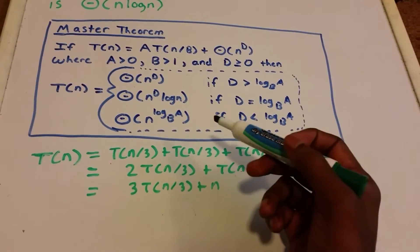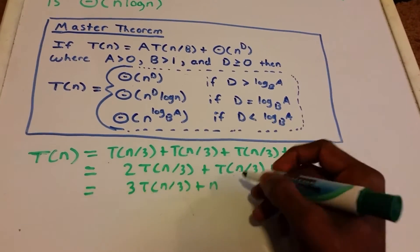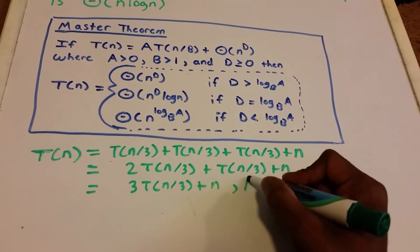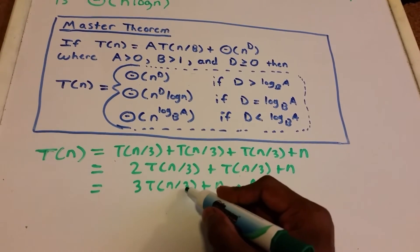We can see that our a value is 3, and our b value is 3.